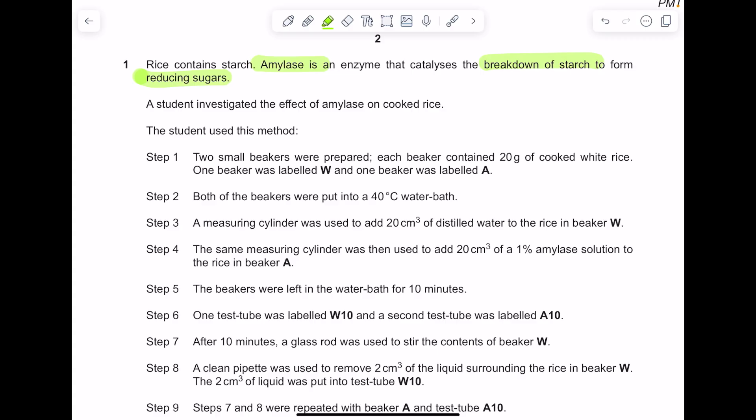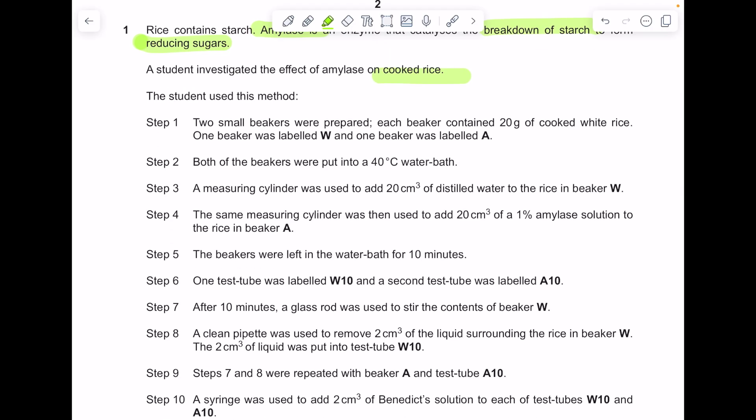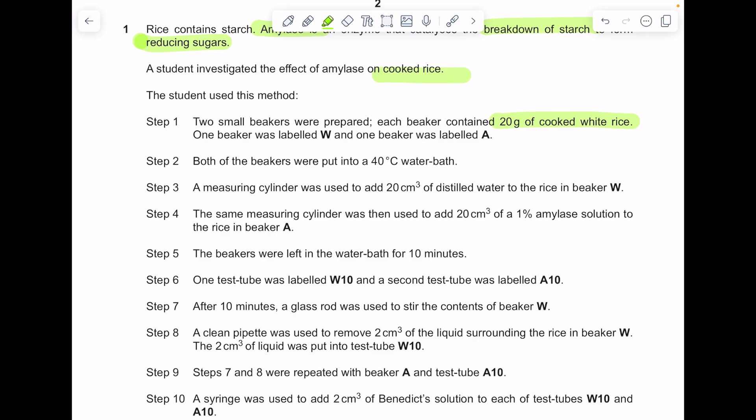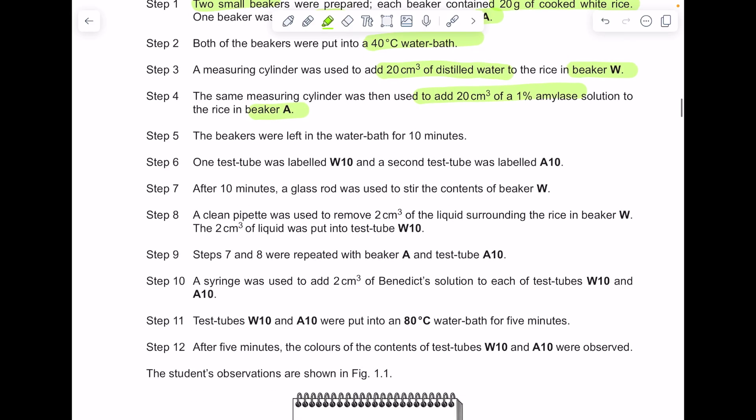A student investigated the effect of amylase on cooked rice. The student used this method. Two small beakers were prepared, each containing 20 grams of cooked white rice. One beaker was labelled W, the other was labelled A. Both beakers were put in a 40 degree water bath. A measuring cylinder was used to add 20 centimeters cubed of distilled water to the rice in beaker W. The same measuring cylinder was then used to add 20 centimeters cubed of 1% amylase solution to beaker A.